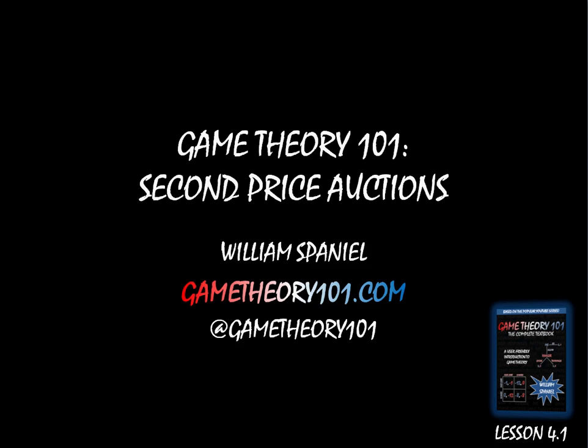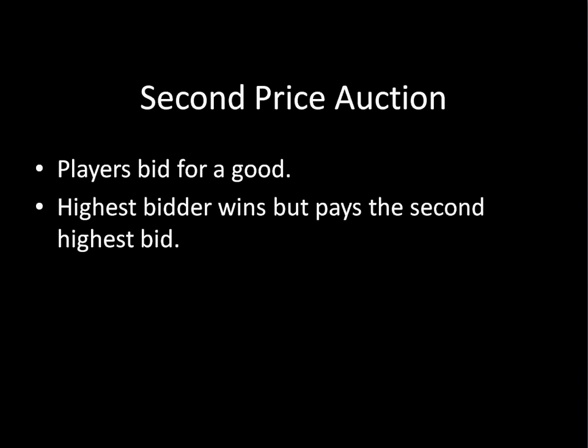A second price auction looks like this. This is a sealed bid auction, and the players are going to be bidding over a good. The number of players here really doesn't matter — it could be 2, 3, 4, 876, 304. We just have some number of players, and they're submitting sealed bids to an auctioneer. The auctioneer will take those bids, look at all of them, and see which bid is the highest, and give the good to the highest bidder.